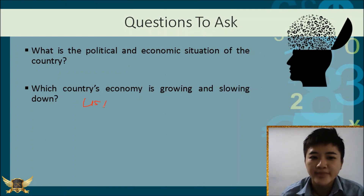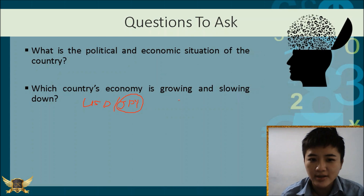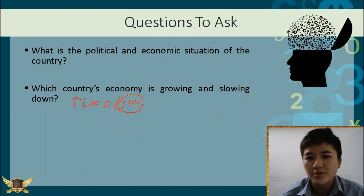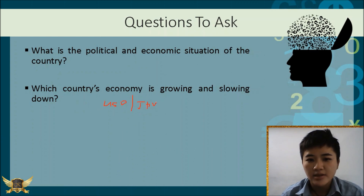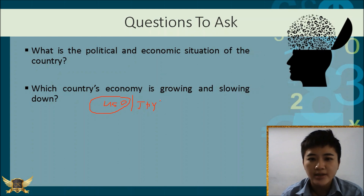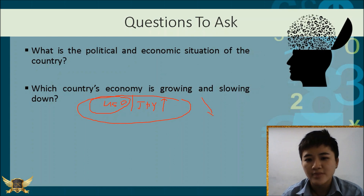For example, let's say today you're trading dollar-yen. Assuming Japan's economy is constant but the United States is growing, the dollar would appreciate. On the other hand, if you're trading dollar-yen and the United States economy remains constant but Japan's economy is growing, then the dollar would depreciate.